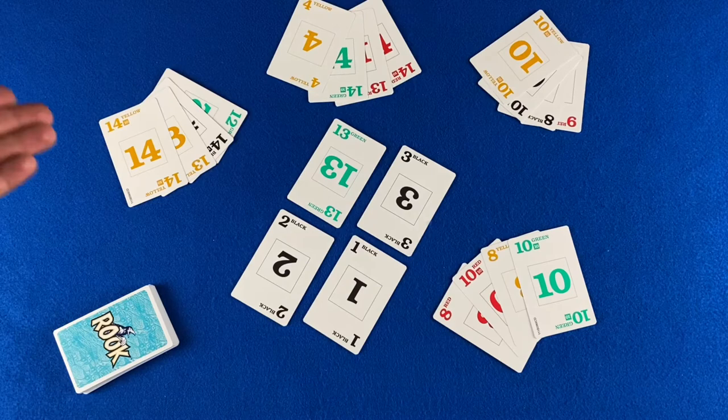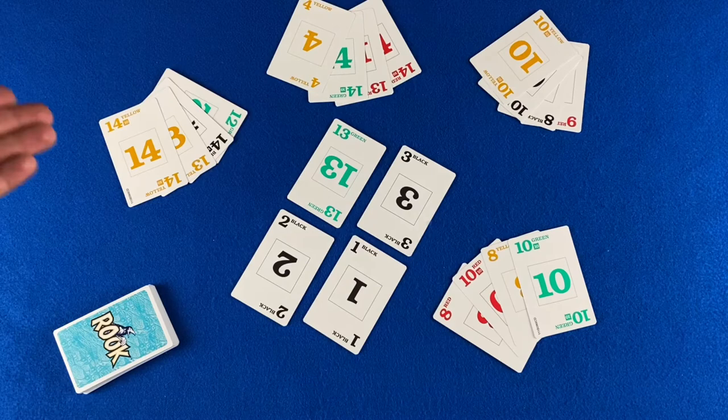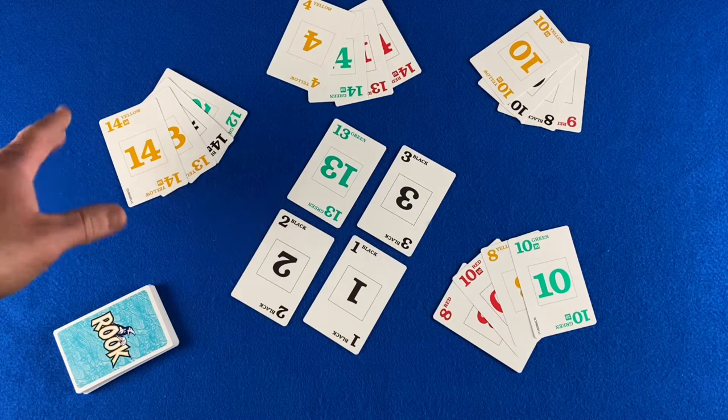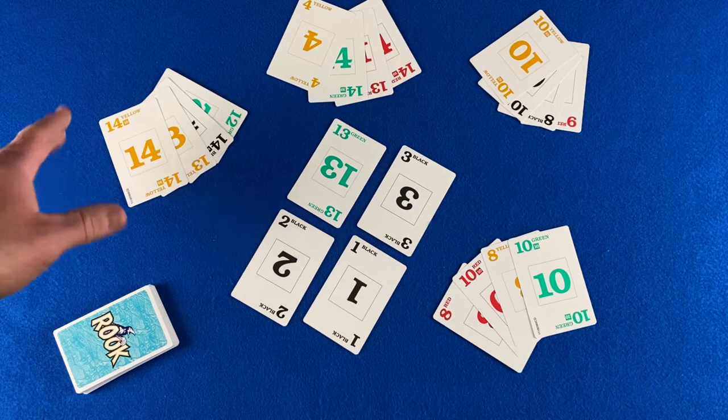Play begins with the player to the left of the dealer. Our dealer is down here in the bottom right of the screen, so up here in the top left is the player that will go first. Now on a player's turn, they are trying to capture as many cards from the center as possible. And there are a few ways to do that.